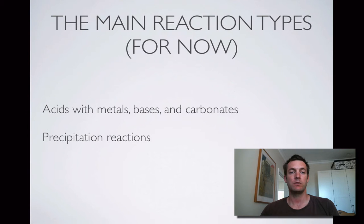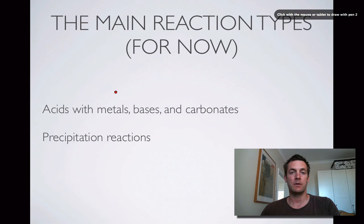We'll look first of all at the main reaction types. There are others that you might get examined on but not in semester one. We're going to be looking at the reactions of acids with three main groups of substances: metals, bases and carbonates, and we'll also be looking at precipitation reactions.